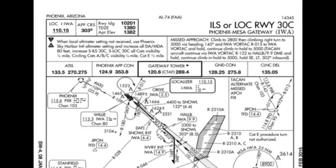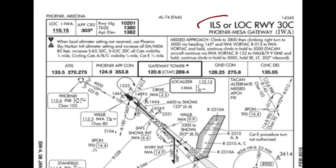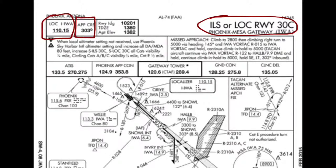Let's start off with the briefing strip — that's the top area right here. We can see it is the ILS or Localizer for Runway 30 Center into Phoenix Mesa Gateway Airport. Right up here is the Localizer Frequency 110.15, then the Approach Course 303, Runway Landing Length 10,201, Touchdown Zone Elevation 1380, and Airport Elevation 1382.